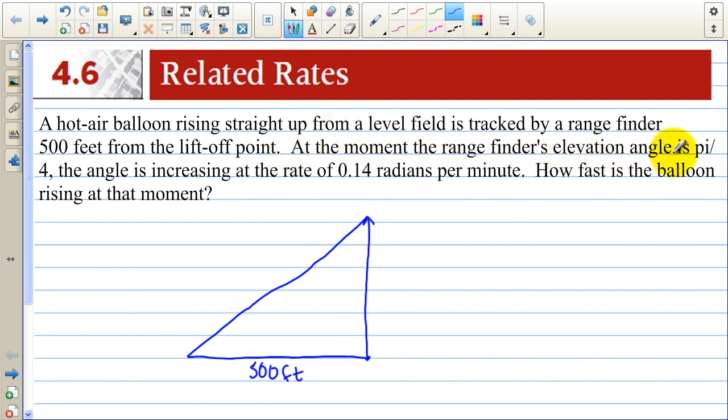At the moment the rangefinder's elevation angle is pi over 4, so we can call this theta the angle, so theta equals pi over 4. The angle is increasing at a rate of 0.14 radians per minute. Now that's a rate, d theta over dt, and that of course suggests we're going to be doing derivatives. They tell us that equals 0.14 radians per minute. It says how fast is the balloon rising at that moment? If we call the balloon's height h, then what they want to know is what is dh dt? How fast is the height of the balloon changing? That's what we want to find out.